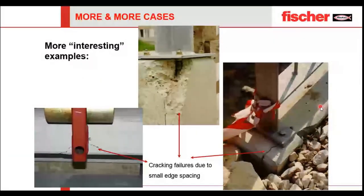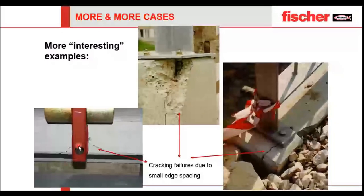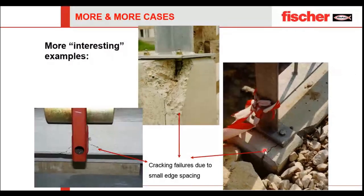Here are more examples of failures happening on site. You can see there is no concrete at all, yet an anchor was installed. You can also see cracking at the edges due to small edge distance or small anchor spacing. And again, a crack that occurred due to inappropriate installation or inappropriate selection of the anchor.